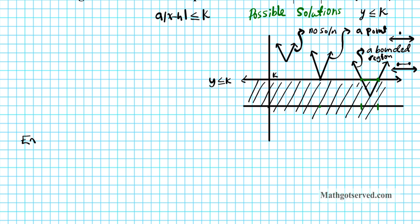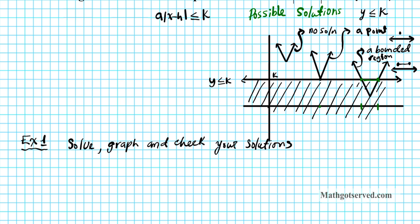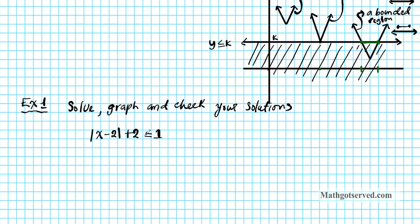For Example 1, we need to solve, graph, and check our solutions. We have the absolute value inequality: absolute value of x minus 2, plus 2, is less than or equal to 1. As covered in part 1 of this tutorial series, isolate the absolute value quantity first, then solve. So we subtract 2 from both sides and get the absolute value of x minus 2 is less than or equal to negative 1.